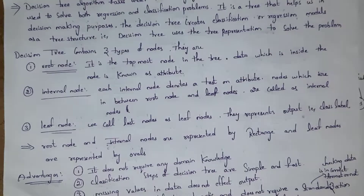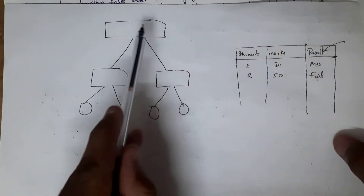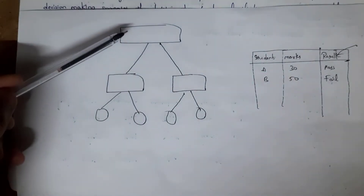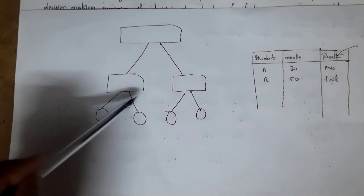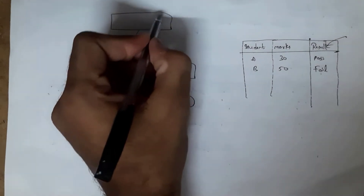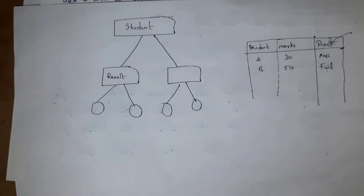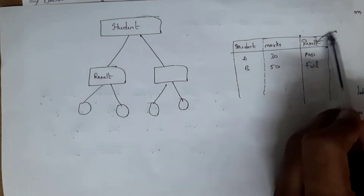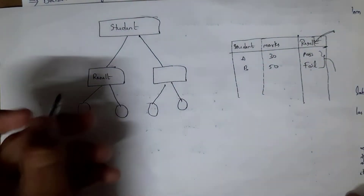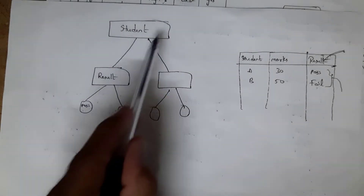Decision tree contains three types of nodes: root node, internal node, and leaf node. The topmost node is known as the root node, the last nodes are called leaf nodes, and nodes in between are known as internal nodes. For example, this table contains three attributes: student, marks, and result. Internal nodes represent a test on an attribute, whereas leaf nodes represent a class label. The last attribute is the class, and the data in that class is the class label — here they are pass and fail.